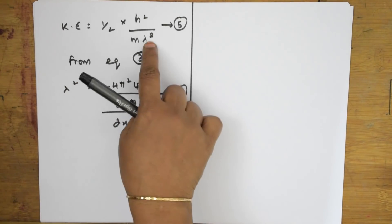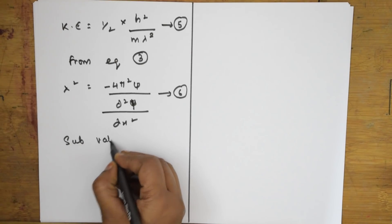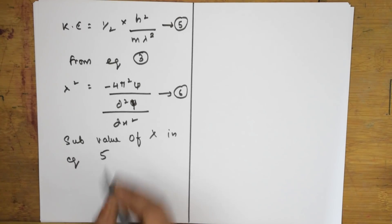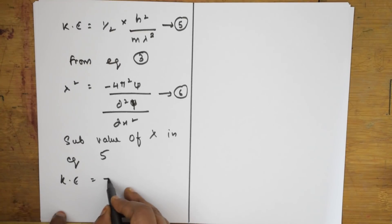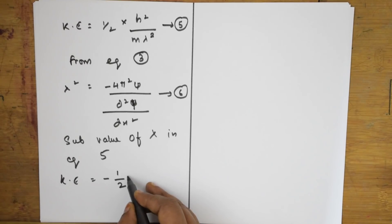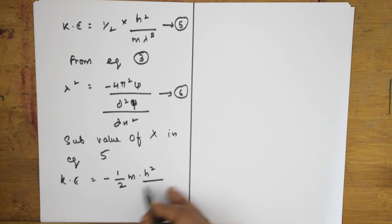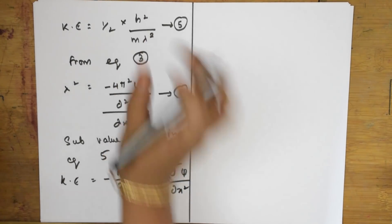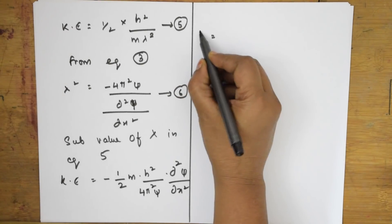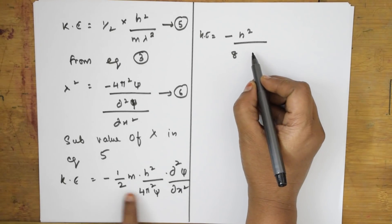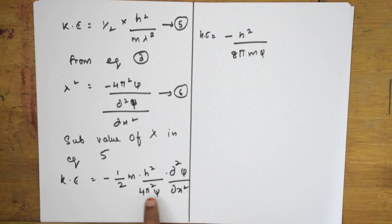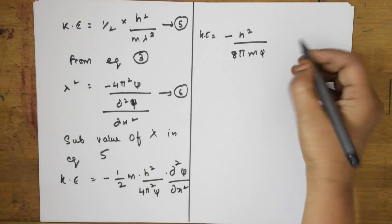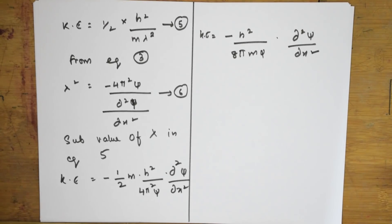Now substitute the value of λ² from equation six into equation five. When we substitute: KE = −(1/2m) · (h²/4π²) · (1/ψ) · d²ψ/dx². This can be further written as: KE = −h²/(8π²m) · (1/ψ) · d²ψ/dx².